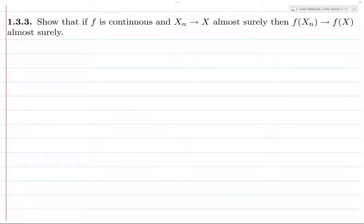Alright, so what we want to prove is that if we have convergence almost surely of random variables, then this will stay true if we pass these under a continuous function.